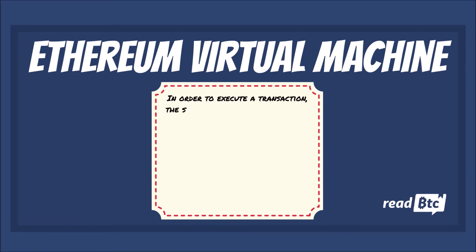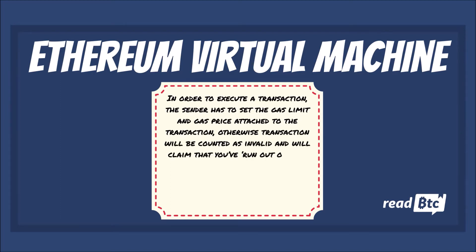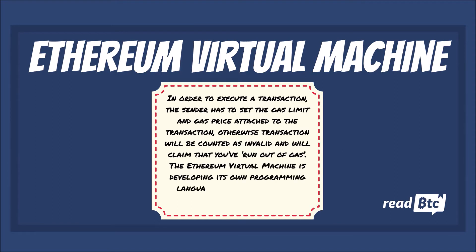In order to execute a transaction, the sender has to set a gas limit and the gas price attached to the transaction. Otherwise, the transaction will be counted as invalid and it will claim that you have run out of gas. The Ethereum Virtual Machine is also developing its own programming language known as EVM bytecode.